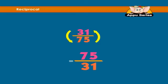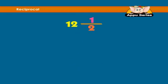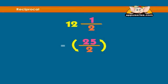Find the reciprocal of 12 and a half. First, convert the mixed number to an improper fraction: 12 and a half equals 25 over 2. Next, we switch the numerator and the denominator to find the reciprocal: 2 over 25.